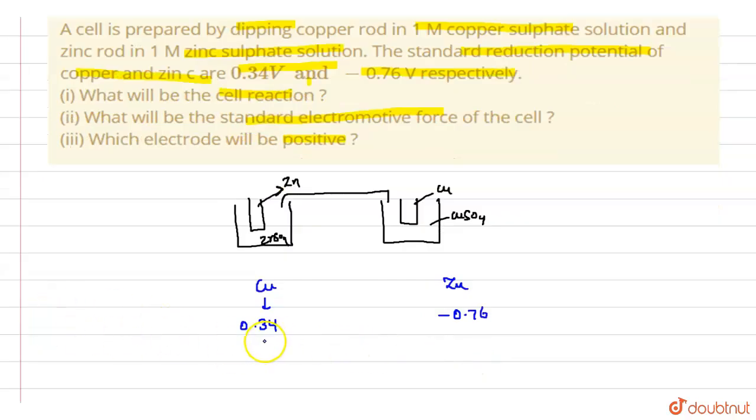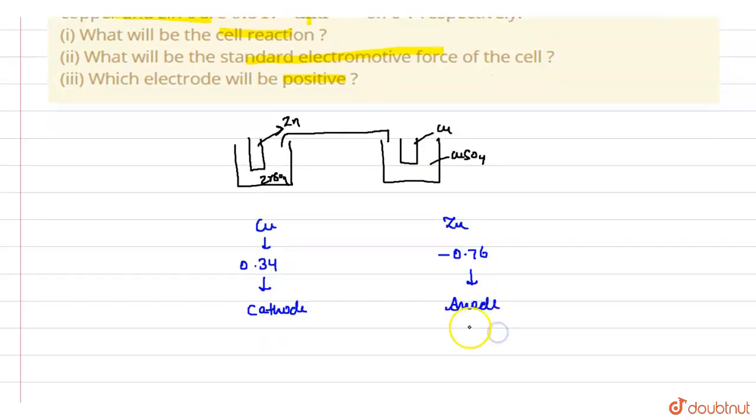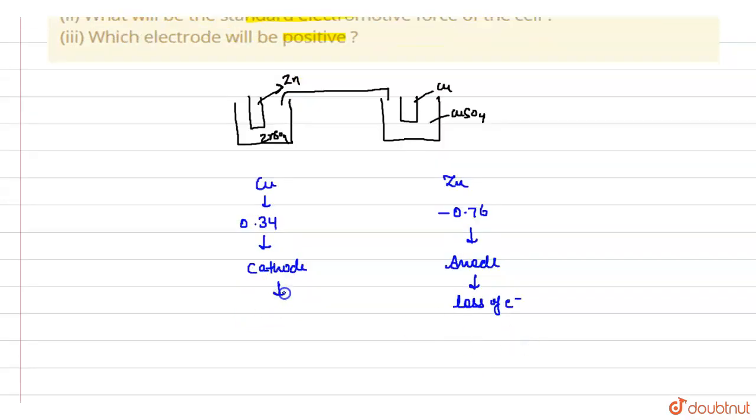Whichever electrode has more reduction potential acts as cathode, and which has lower reduction potential always acts as anode. At anode, loss of electrons takes place, and at cathode, gain of electrons takes place.